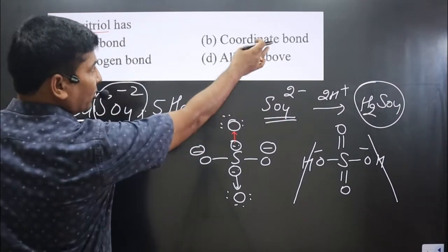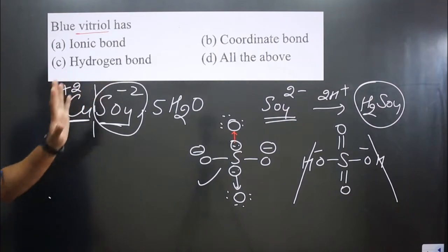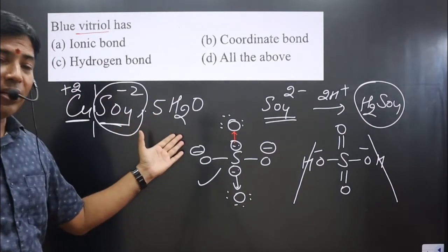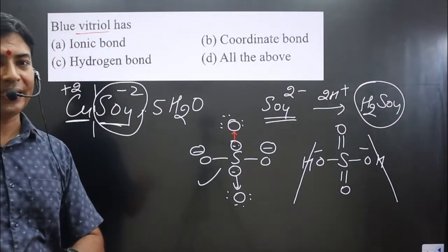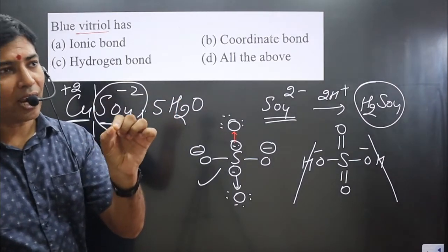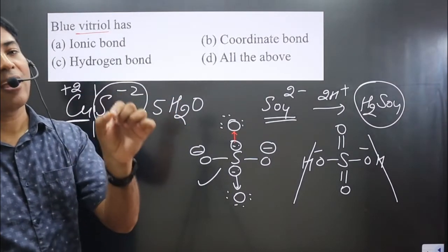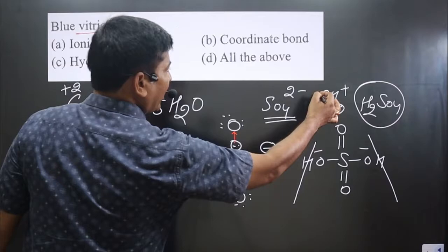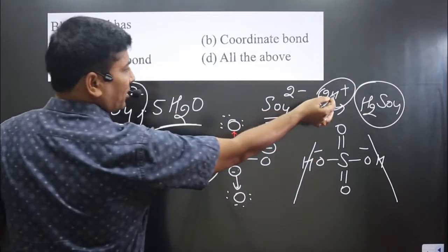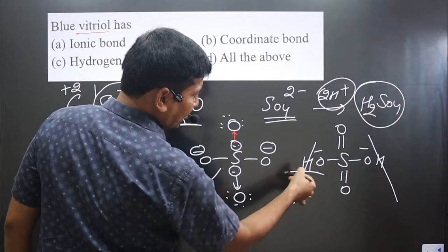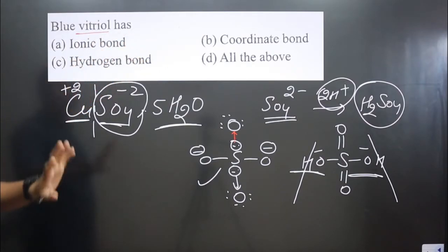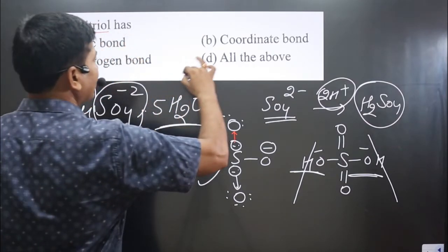We have identified the ionic bond from the Cu²⁺–SO₄²⁻ interaction, and the coordinate bond within the sulfate polyatomic ion. Next, hydrogen bonding is present: the sulfate ion contains oxygen, and we also have water molecules — hydrogen attached to oxygen forms hydrogen bonds, since hydrogen bonded to oxygen, nitrogen, or fluorine always forms hydrogen bonding. The H⁺ from water attaches to the oxygen of sulfate, forming a hydrogen bond. So ionic bond, coordinate bond, and hydrogen bond — all three bonds are present, and option D is correct.